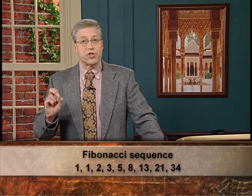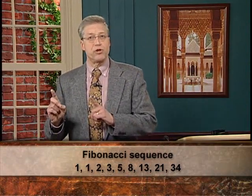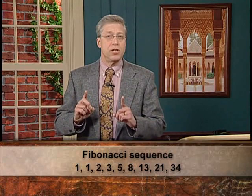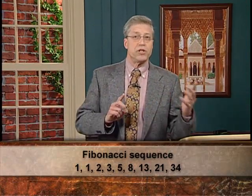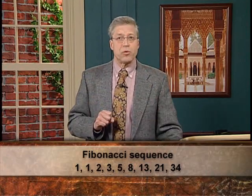Each number in this sequence is the sum of the two previous numbers: 5 and 8 is 13, 8 and 13 is 21, 13 and 21 is 34. Fibonacci was actually looking at this sequence in order to count the number of rabbits you would have after a certain number of generations. Although we call it the Fibonacci sequence, it is actually much older — it was known to Islamic mathematicians and to Indian mathematicians.